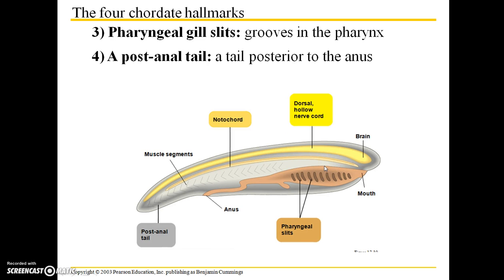The third characteristic is pharyngeal gill slits, which are grooves within the pharynx. The fourth chordate hallmark is a post-anal tail, which is literally a tail that's posterior to the anus, shown in this region here in the picture.